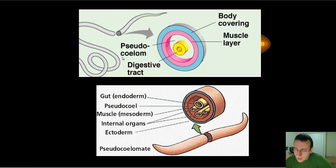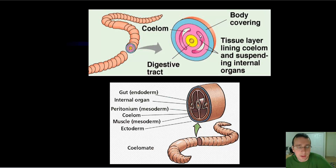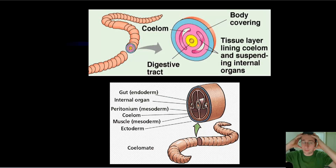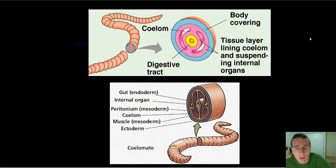Another group is called pseudocoelomates — they have the digestive tract surrounded by the endoderm, and they have the ectoderm and the mesoderm, but there's a cavity between the endoderm and the mesoderm. That's the pseudocoelomates — they have a cavity between the internal layers and the actual intestinal tract. True coelomates have the three layers and have cavities within the mesoderm, not between the mesoderm and the endoderm. Those are things like us, which have cavities like the thoracic cavity, the gut cavity, the brain cavity. The layers of cells in the mesoderm have cavities inside of them — look at the lungs as a perfect example.